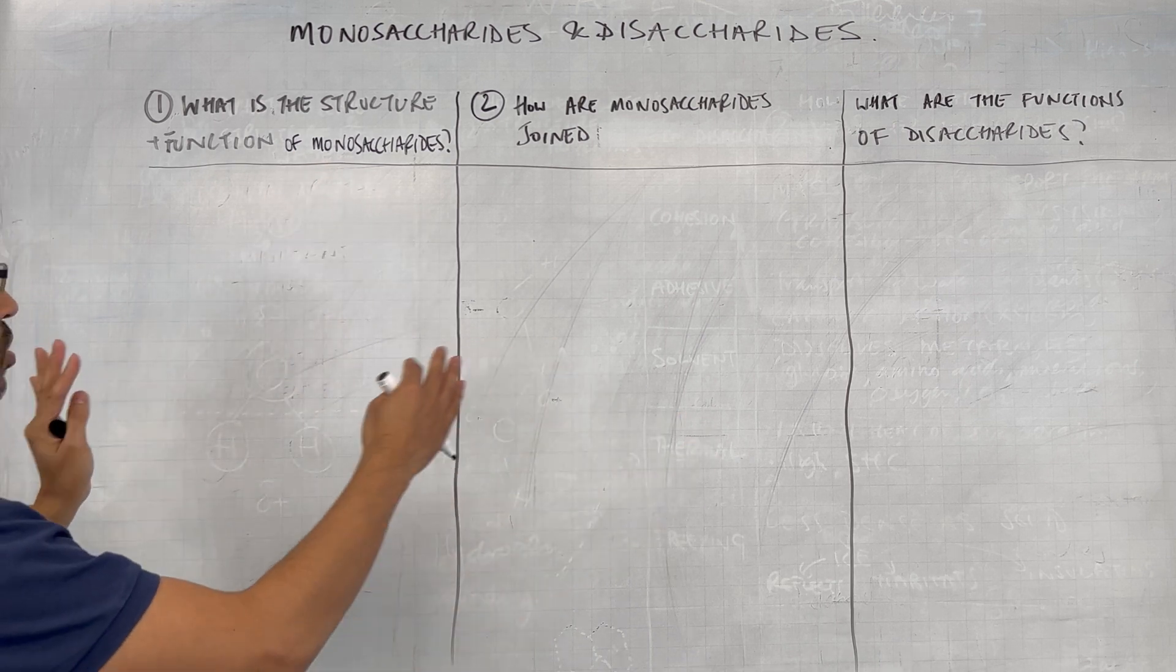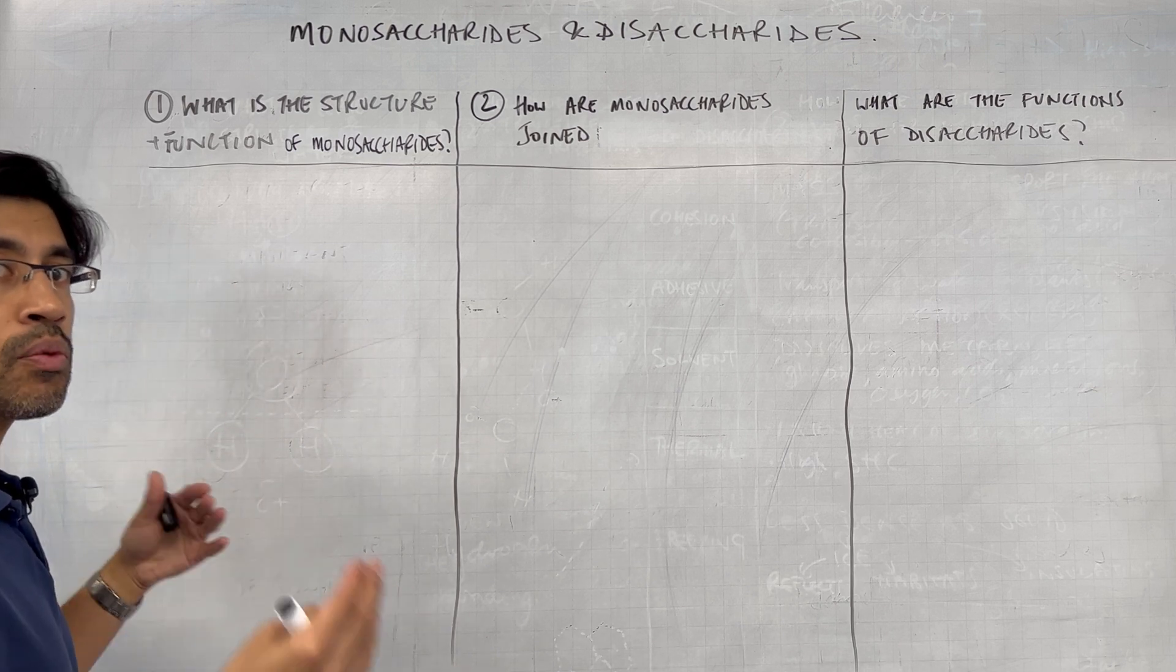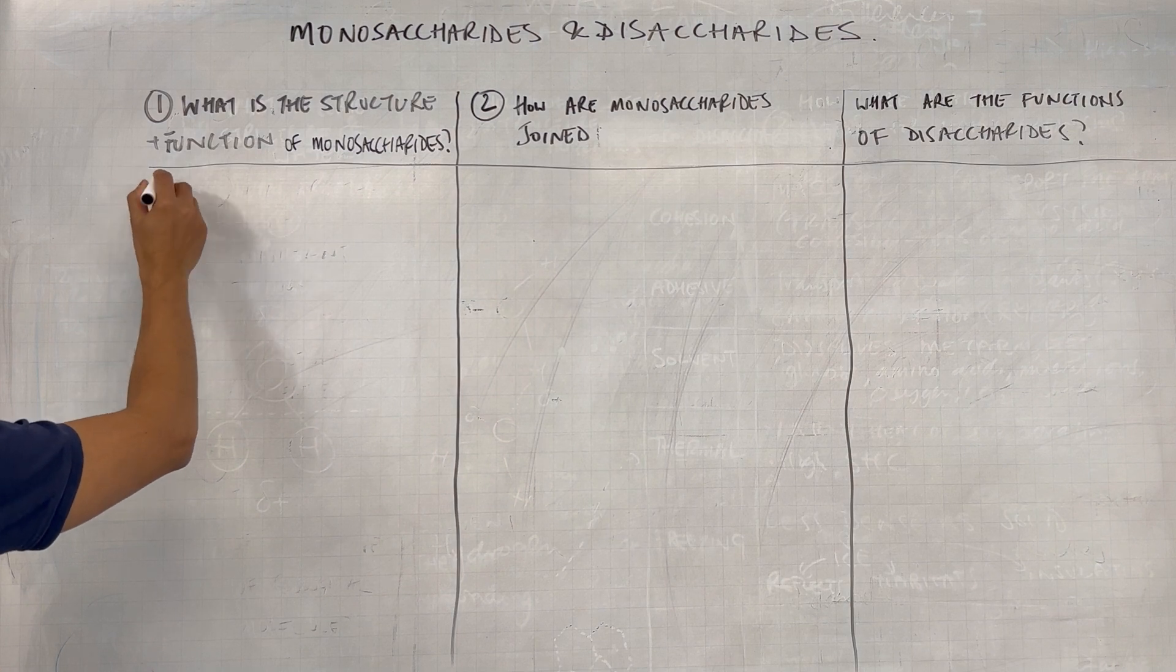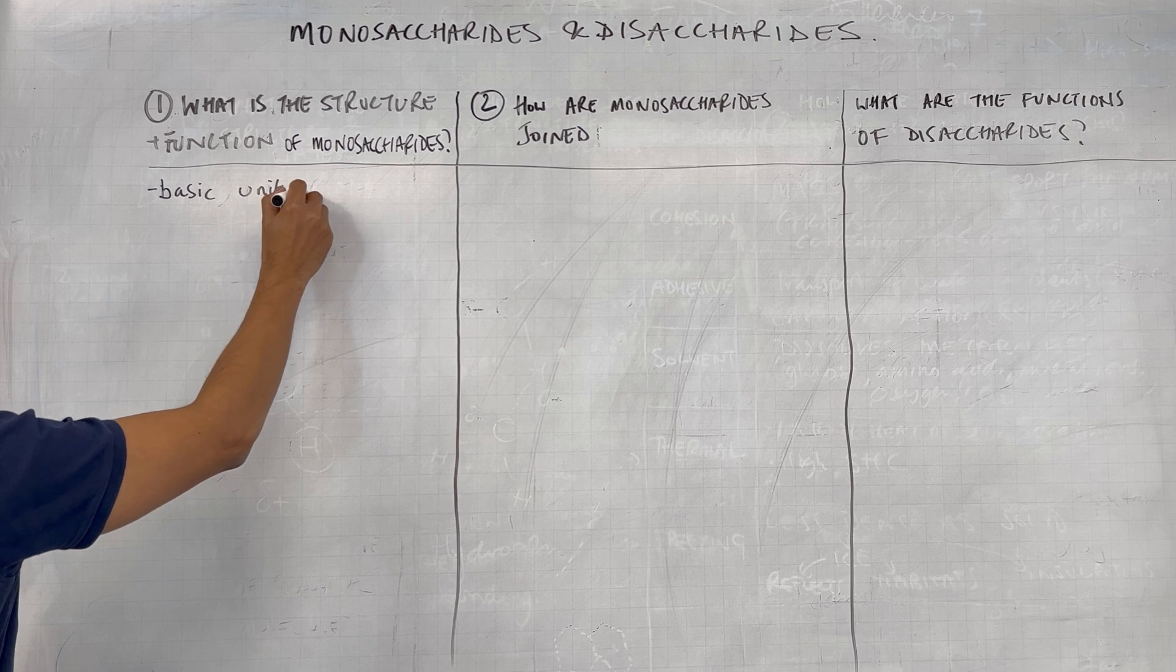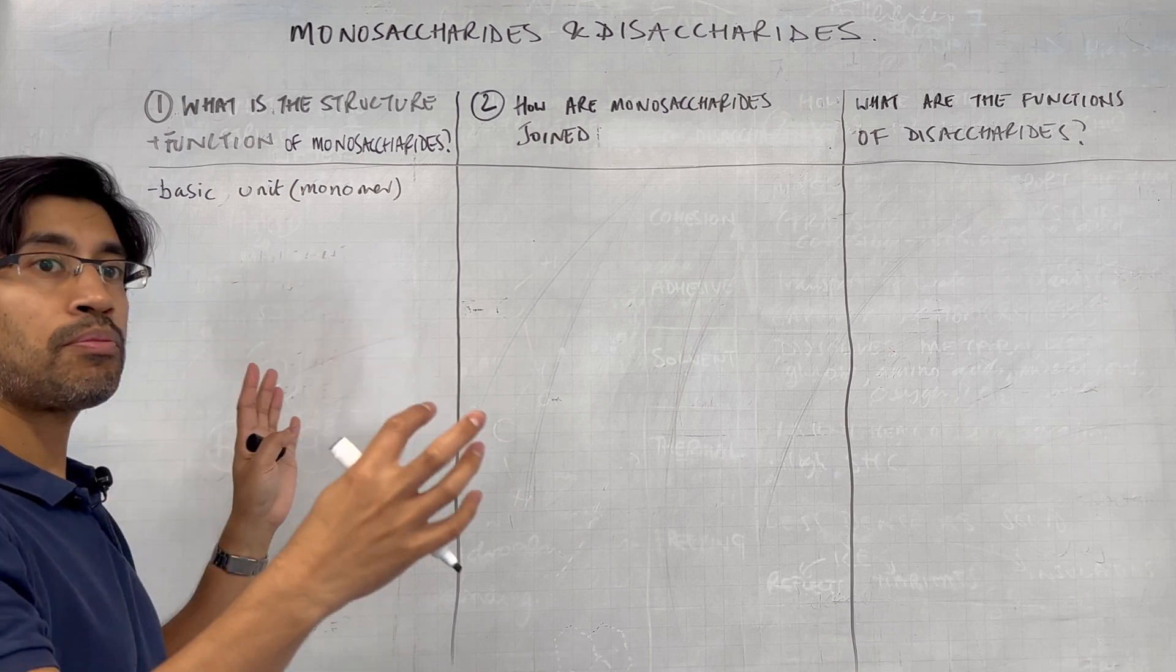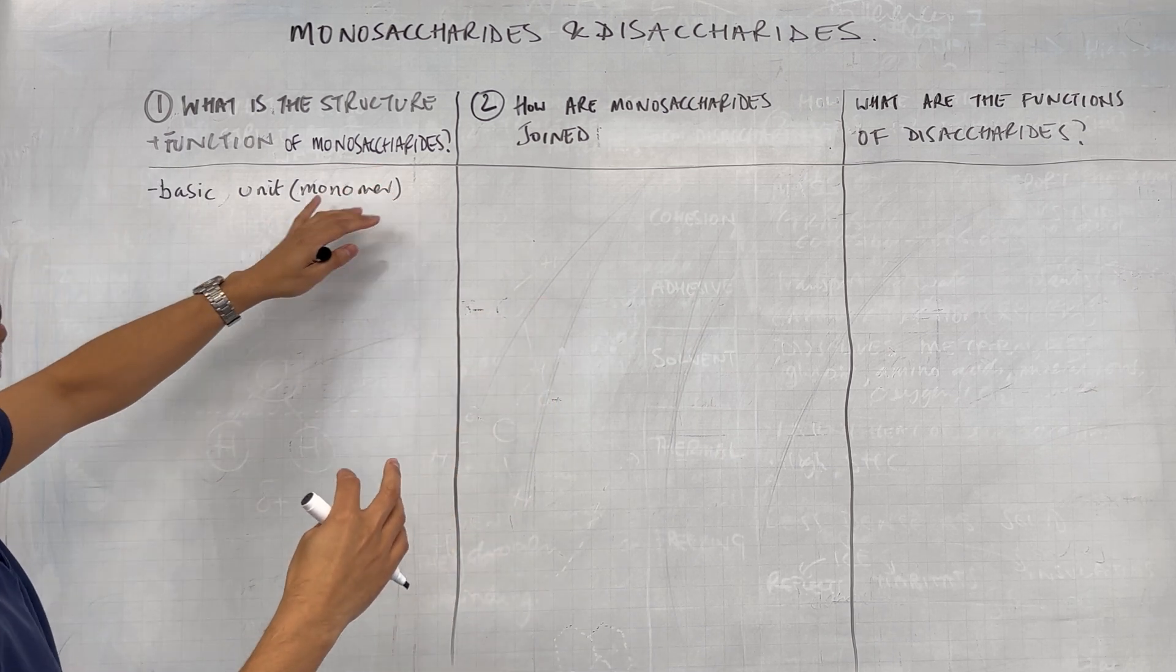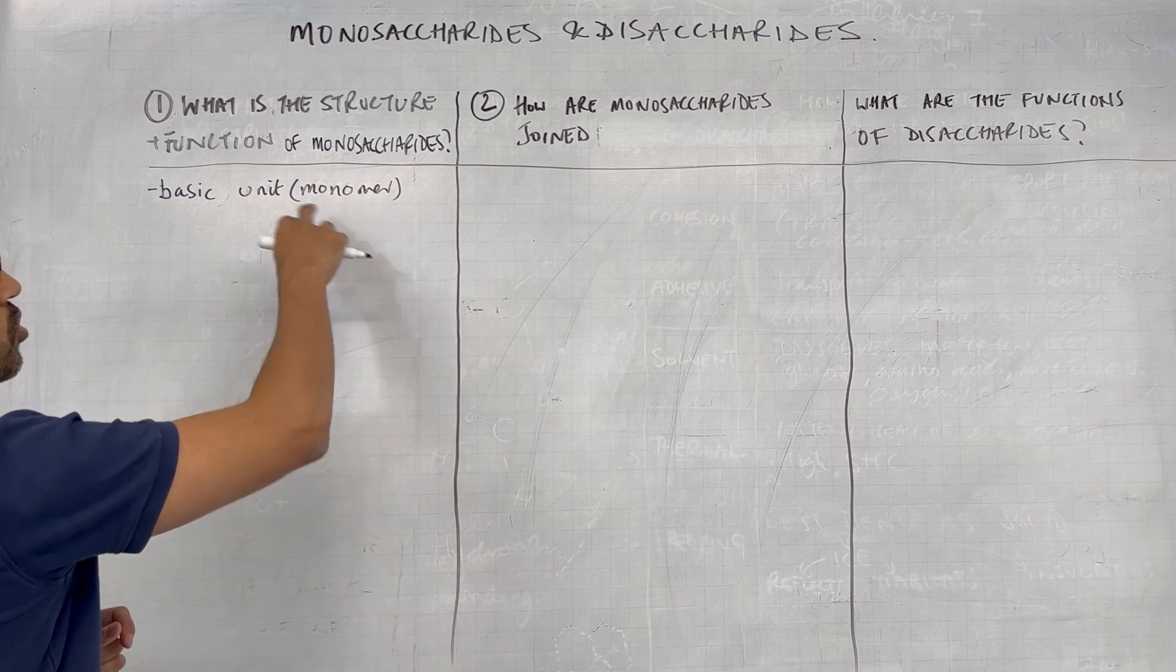What is the structure and function of monosaccharides? Now, in order to get rid of some of the extra stuff, I'm going to focus on glucose here, but I will mention the other monosaccharides that you know about. I want you to remember though, that the monosaccharides are the basic unit or monomer. Remember that the biological molecules, most of them, are made up of smaller molecules, and those smaller molecules are called monomers.